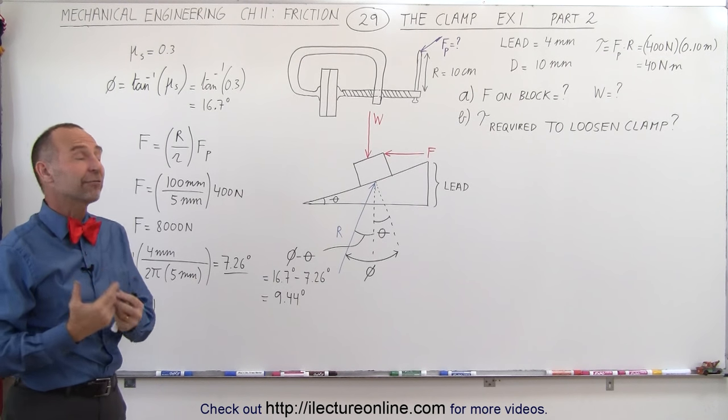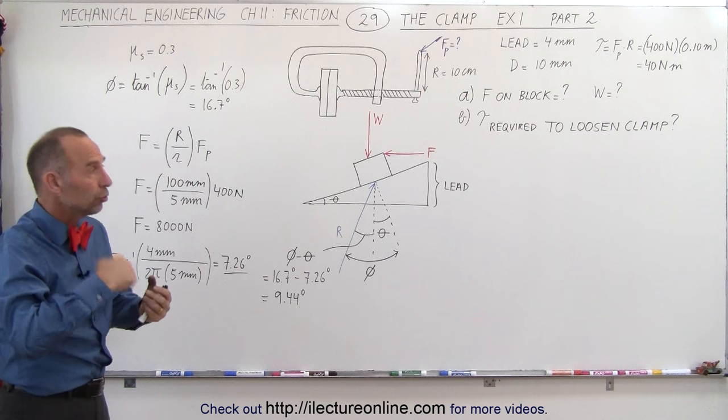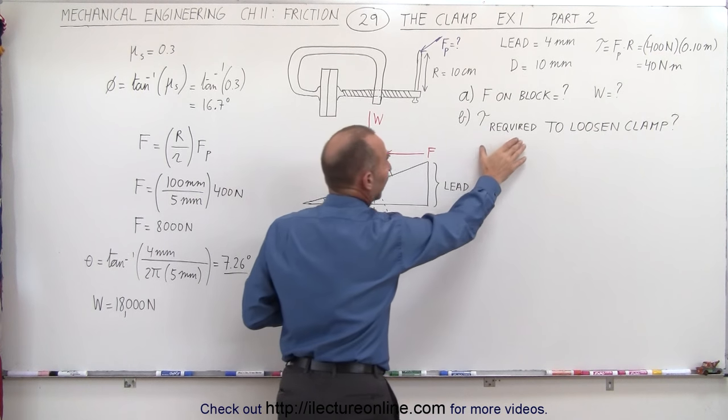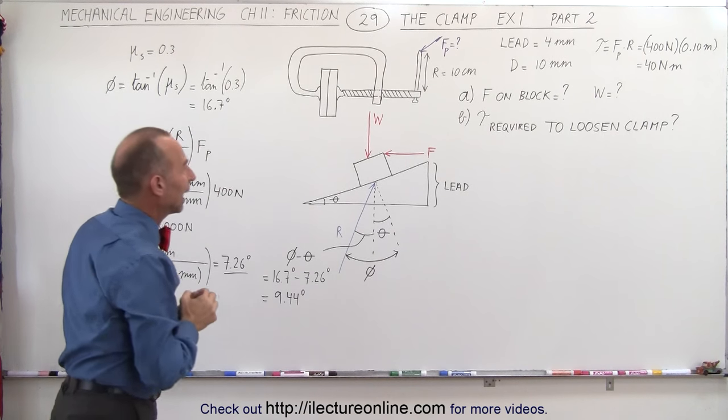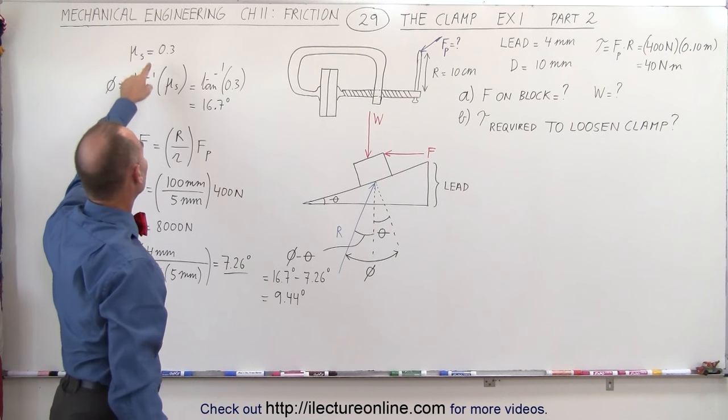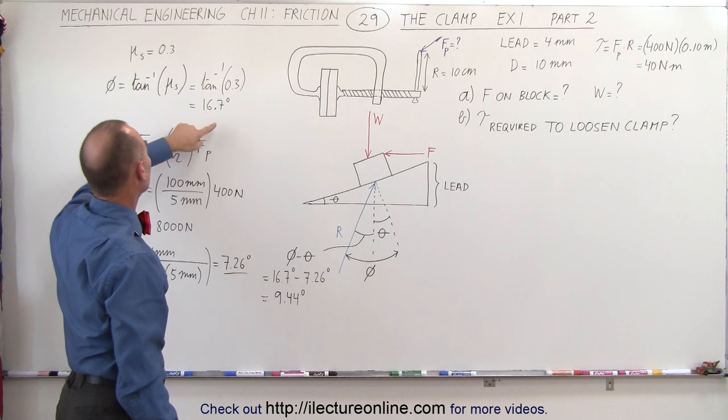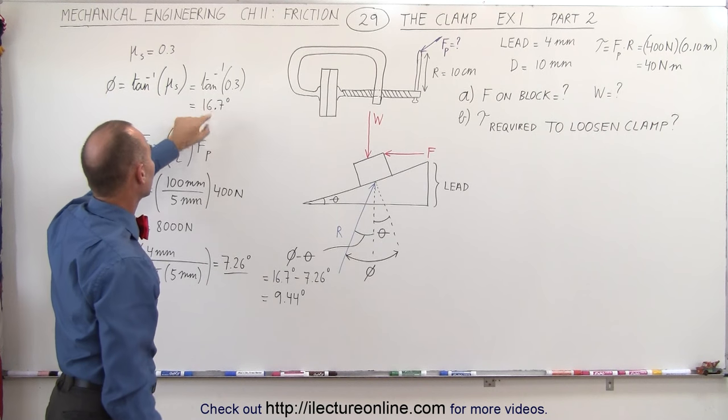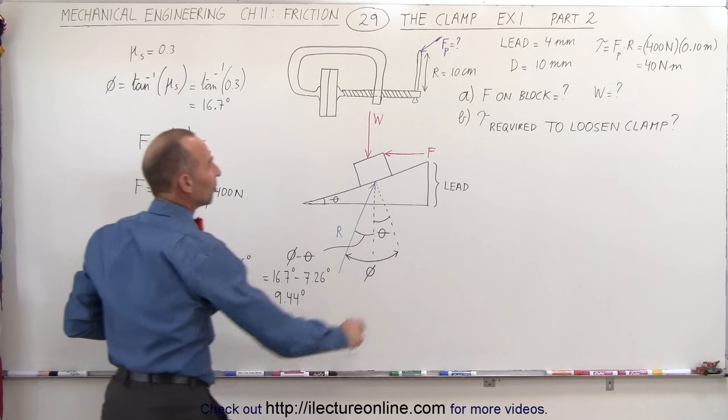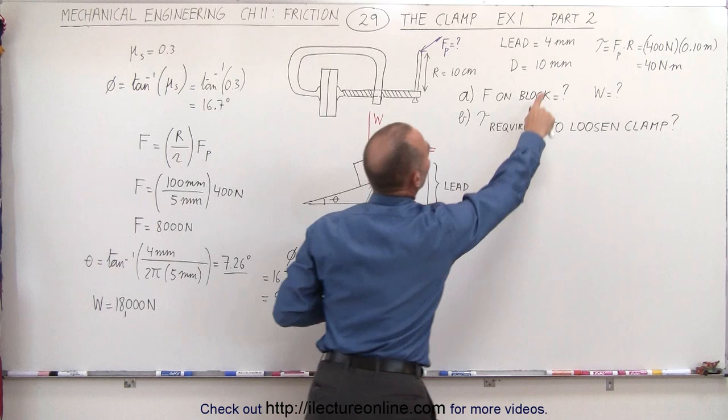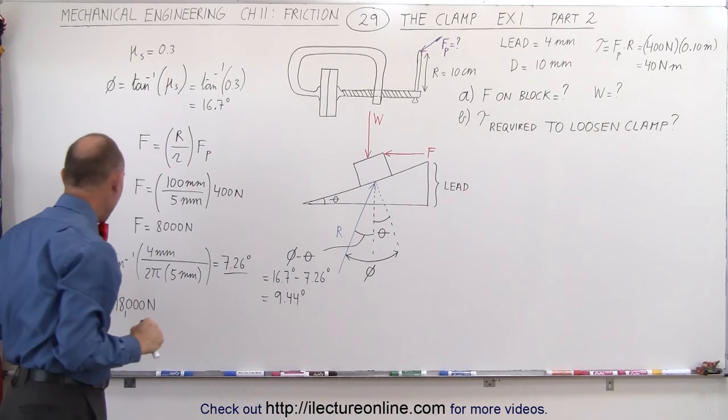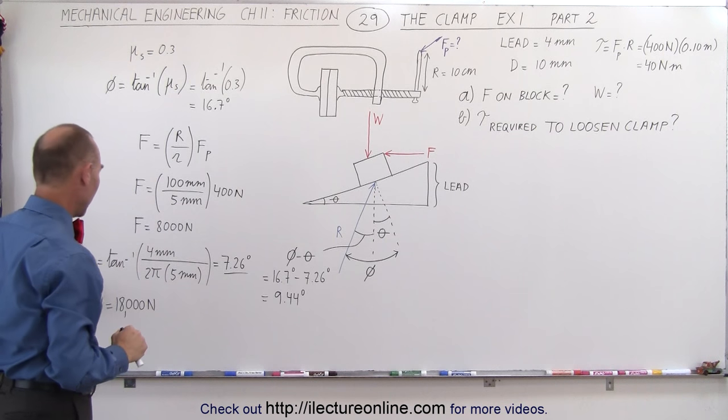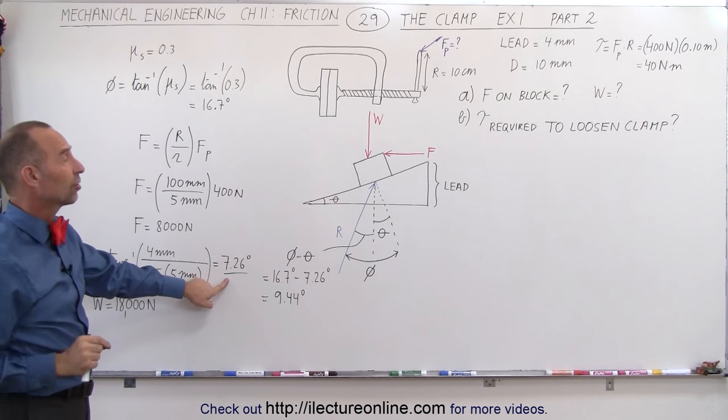Now we're trying to find out what force would be required to loosen the clamp. First we're going to find the torque and eventually the force as well, realizing that the coefficient of static friction is 0.3, which gives us an angle phi of 16.7 degrees. Since the lead was equal to 4 millimeters and the diameter equal to 10 millimeters, we found the lead angle to be 7.26 degrees.